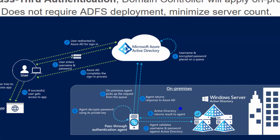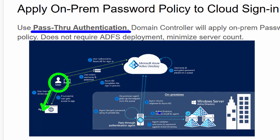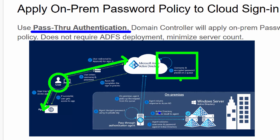When you set up AAD Connect, there are various ways for users to perform sign-in. This diagram depicts pass-through authentication. When a user tries to access an application protected by Azure AD, the app forwards a redirect to Azure AD. With pass-through authentication, the user supplies their username and password. Azure AD encrypts it and places it on a queue.